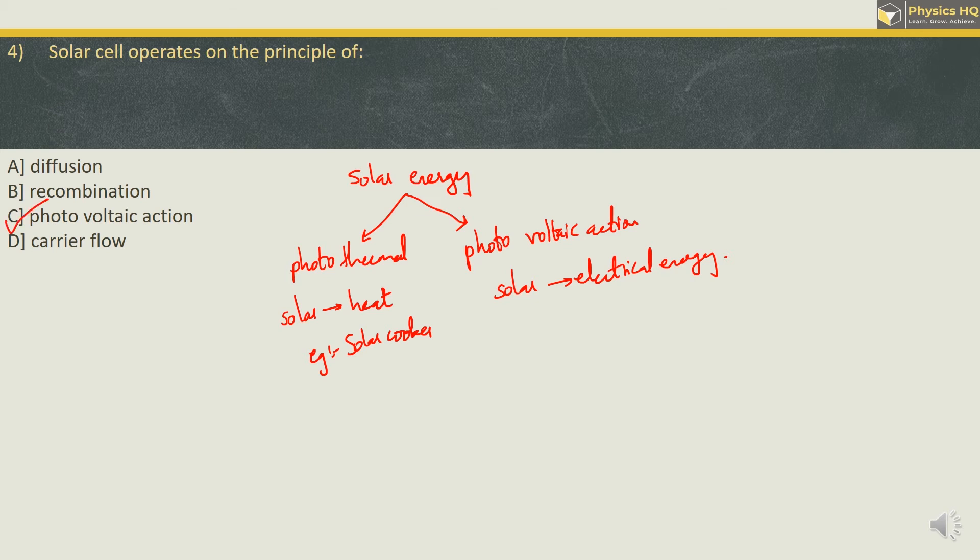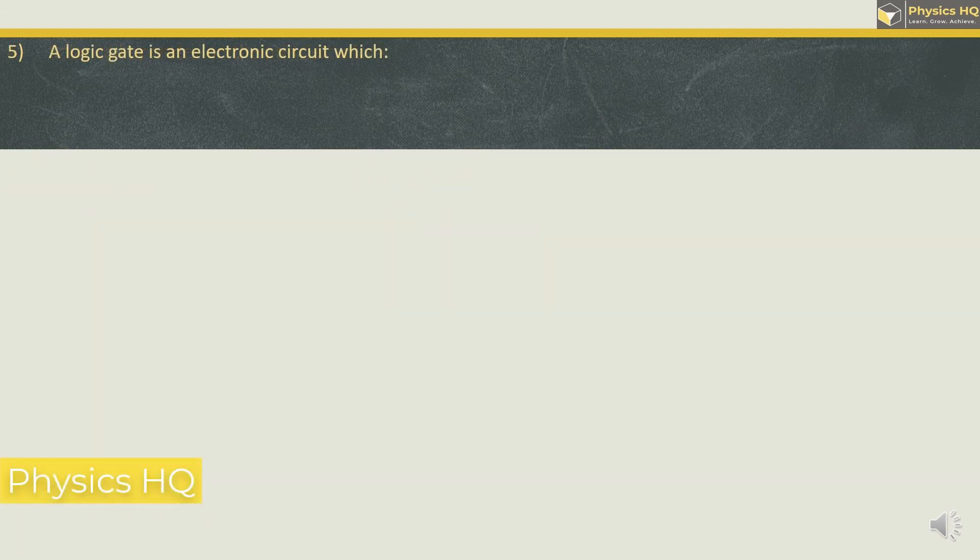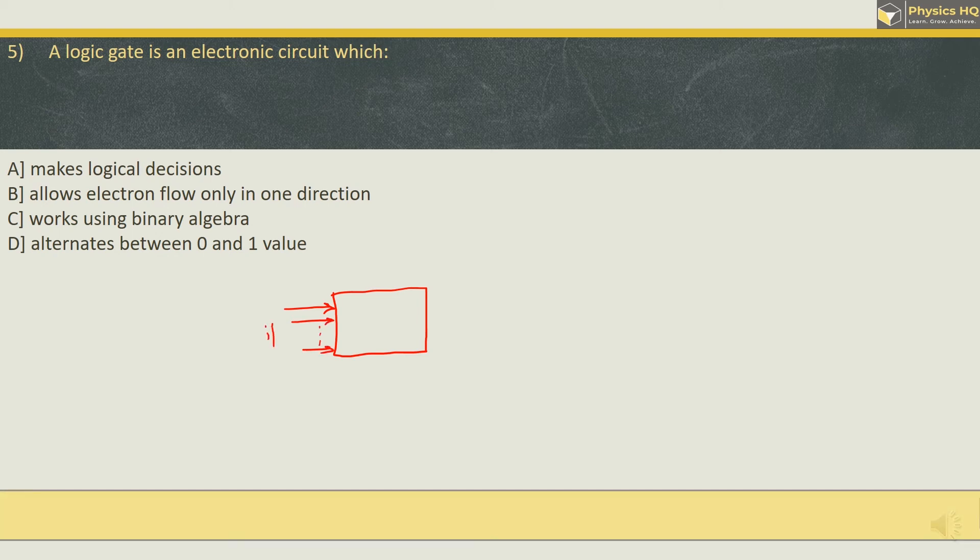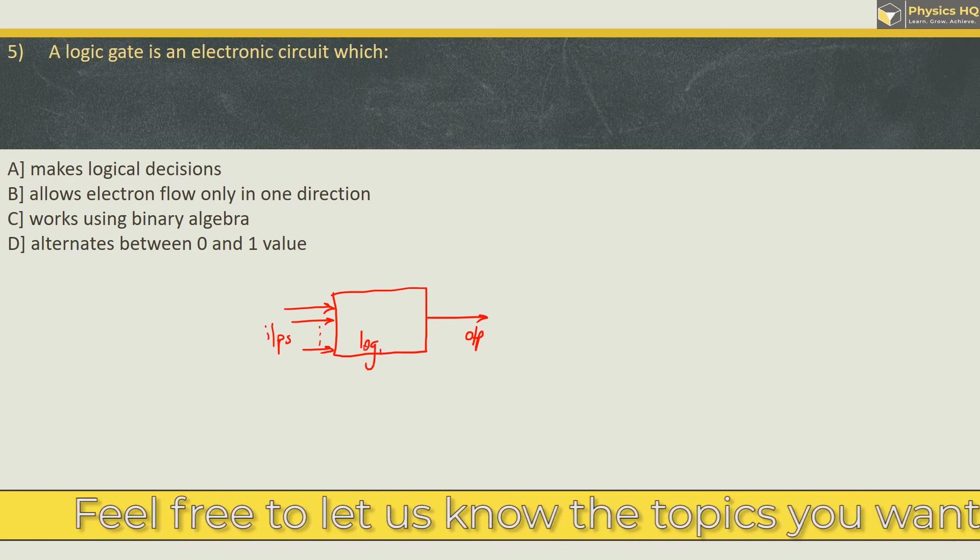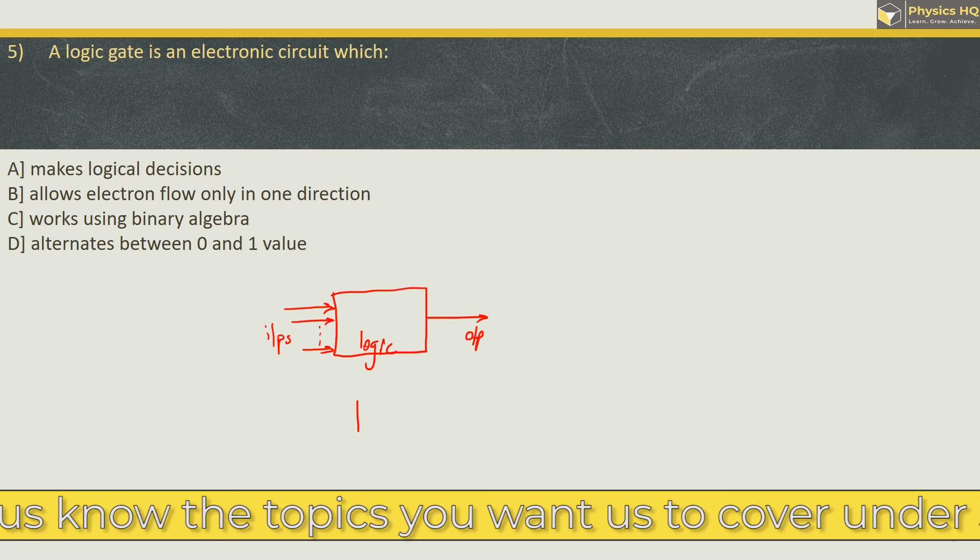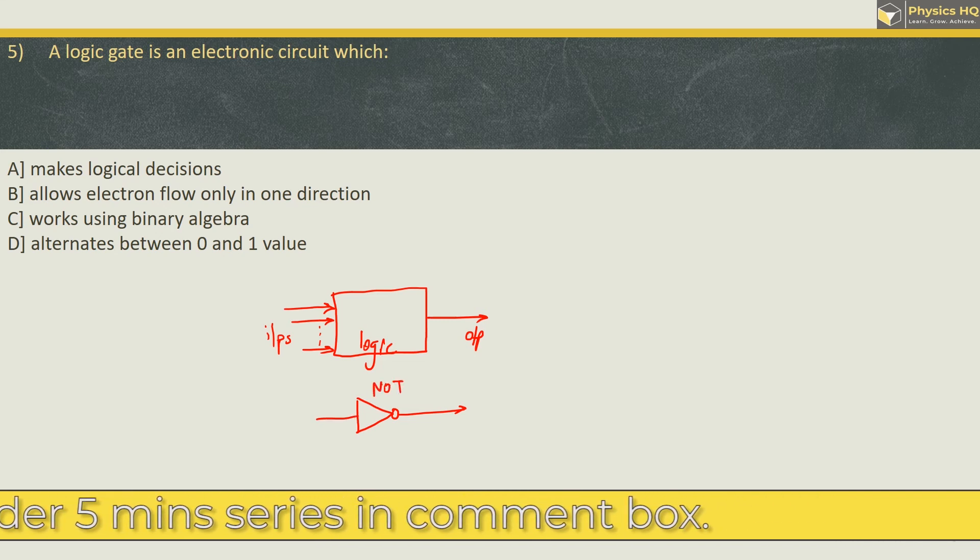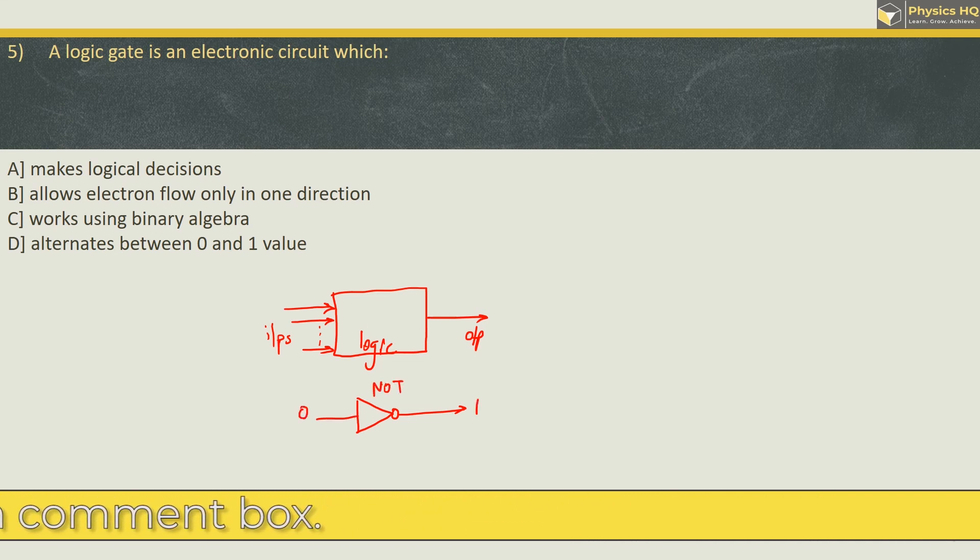Let us go with the next MCQ. A logic gate is an electronic circuit which makes logical decisions, allows electron flow only in one direction, works using binary algebra or alternates between 0 and 1 values. So a logic gate if I represent it by a block over here has one or more than one inputs and it has only one output. The output will depend upon the inputs and the logic which is defined in this block. The simplest logic gate is NOT gate. And in NOT gate if we give input as 0 the output will be 1 and if we give input as 1 the output will be 0. So we get inverted output.